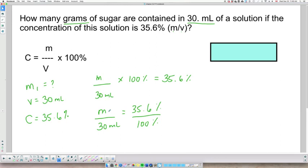All you have to do is cross multiply to find your missing amount, your variable here, the value of your variable. So your mass, if I do 35.6 times 30 divided by 100, the mass will be 10.68 grams.